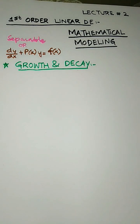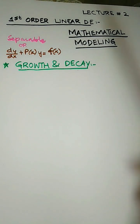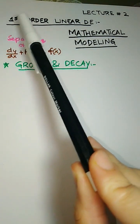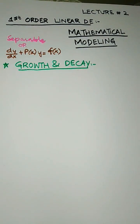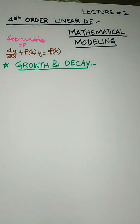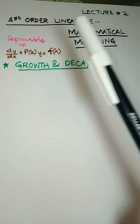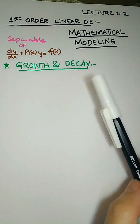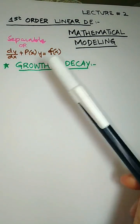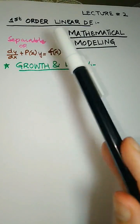Now we are dealing with examples of first order linear differential equations. A first order linear differential equation has a first order derivative — that is, the derivative has order or power one. Check if it is separable; if so, separate and integrate it.